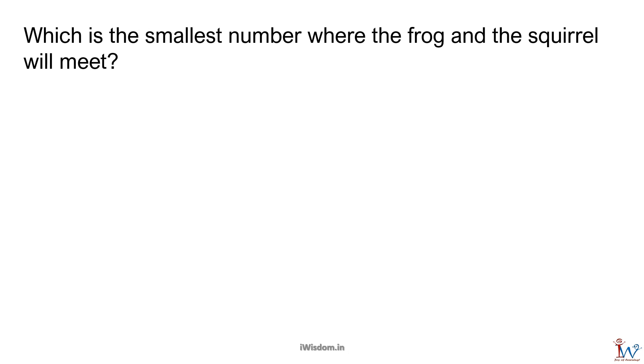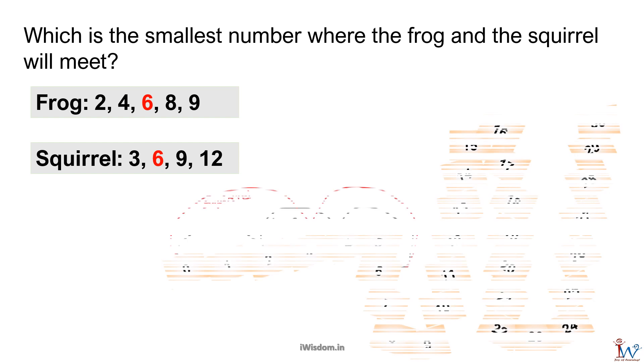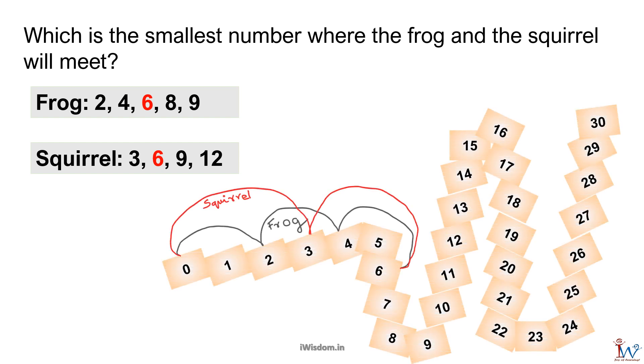Which is the smallest number where the frog and the squirrel will meet? Frog jumps in 2 steps, so it goes to steps 2, 4, 6, 8, 10 and so on. Squirrel jumps in 3 steps, so it goes to steps 3, 6, 9, 12 and so on. 6 is the first place where both frog and squirrel meet. So 6 is the smallest number. Fantastic!